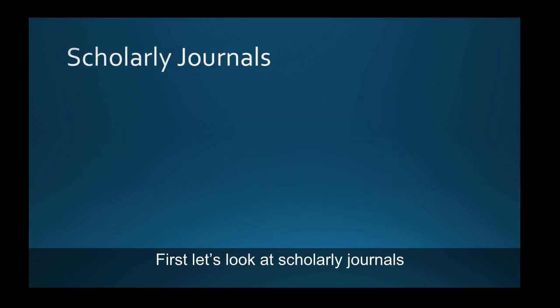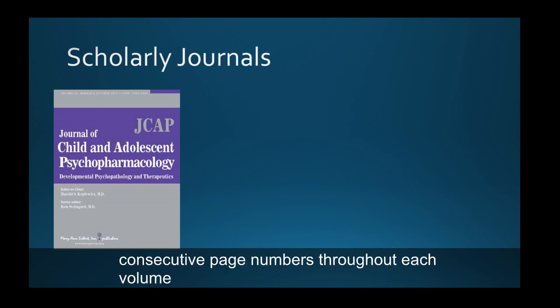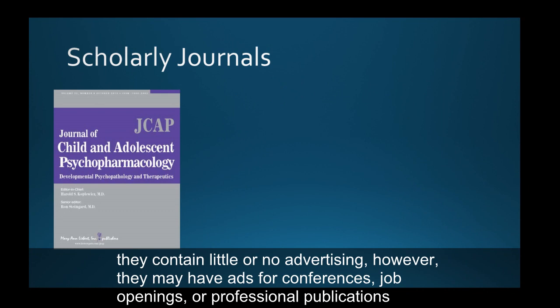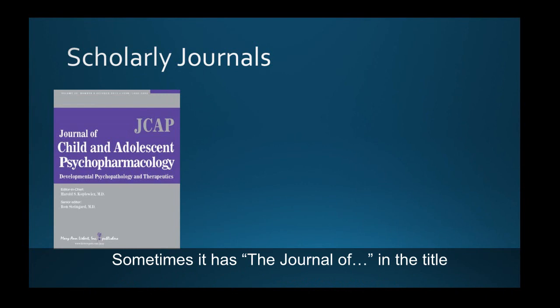First, let's look at scholarly journals. They usually have plain covers and pages, with consecutive page numbers throughout each volume. They contain little or no advertising; however, they may have ads for conferences, job openings, or professional publications. Sometimes the title includes the word "journal."